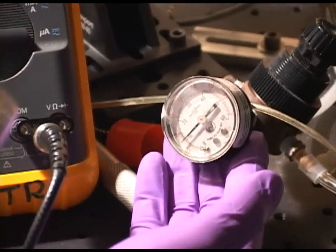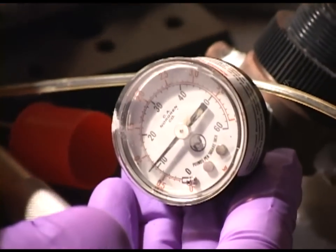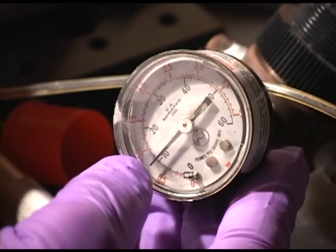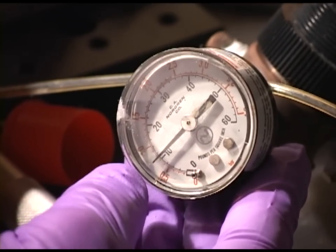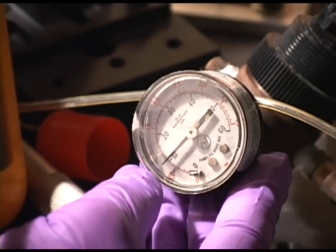First step in mounting the sample is to check the pressure reading on the piston. When mounting the sample, we want the pressure to be set somewhere between 10 and 20 psi. If the pressure is too high, when the piston is applied, the sample could crack.